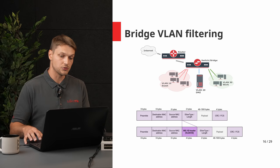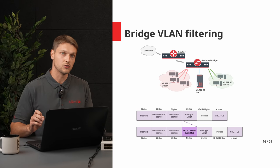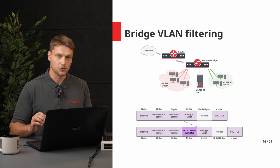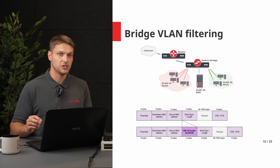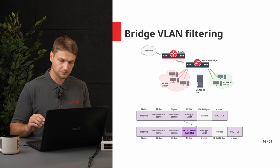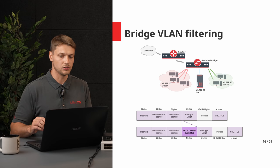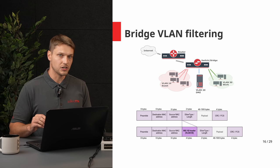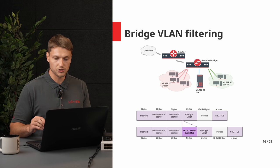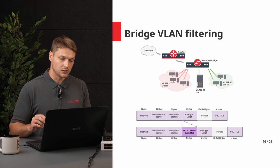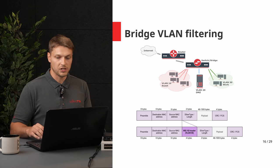VLANs allow you to configure multiple networks on the same physical hardware. You can isolate clients — for example, IoT devices or IP cameras — on different networks and apply unique network policies. A VLAN itself is only a 4-byte header inserted into layer 2 packets, containing a VLAN ID. When a bridge or router receives these packets, it can recognize the VLAN ID and make forwarding decisions.